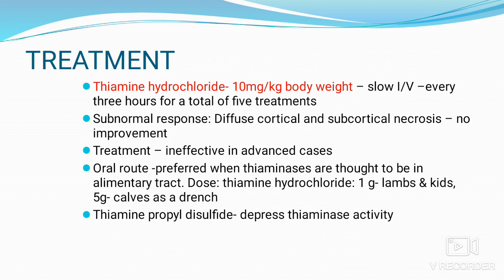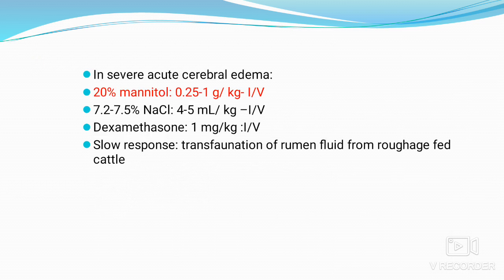Treatment is straightforward. Administer thiamine hydrochloride at 10 mg/kg body weight by slow IV, repeated every 3 hours. Treatment is ineffective in advanced cases, and there is no improvement in animals with diffuse cortical and subcortical necrosis. The oral route is preferred when thiaminase activity is suspected in the alimentary tract; the dose is 1 gram for lambs and kids and 5 grams for calves as a drench. Thiamine propyl disulfide depresses thiamine activity. For severe acute cerebral edema, use 20% mannitol at 0.25 to 1 g/kg body weight IV.